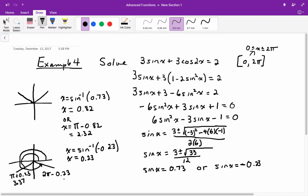And remember that 2π is like 6.28 minus 0.23, which will be equal to 6.05 radians. So your answers for all your solutions are 0.82, 2.32, 3.37, and 6.05.